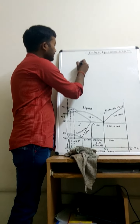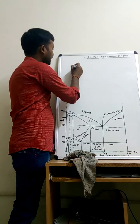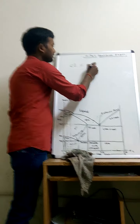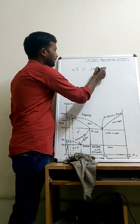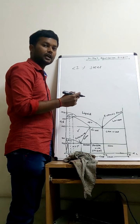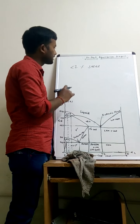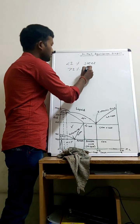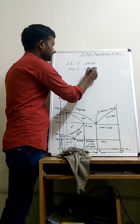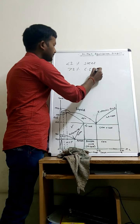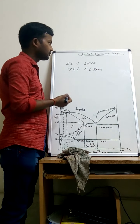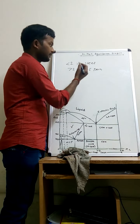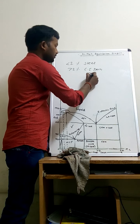If the percentage of carbon in iron is less than 2%, it is called steel. If the percentage of carbon is more than 2%, it is called cast iron. I will explain steel first and then iron.